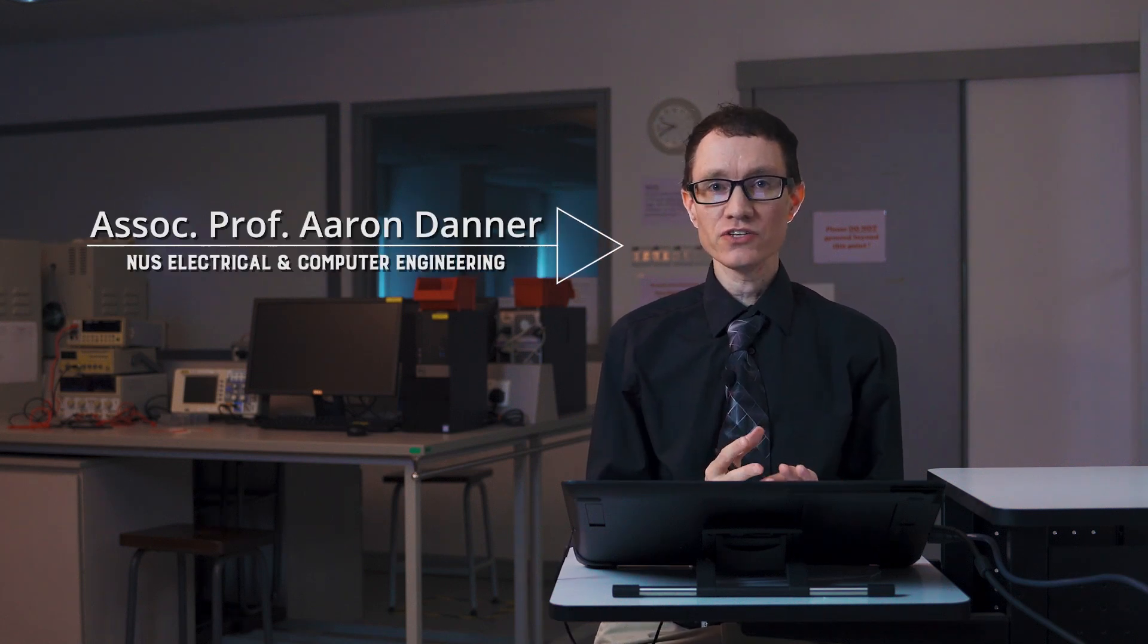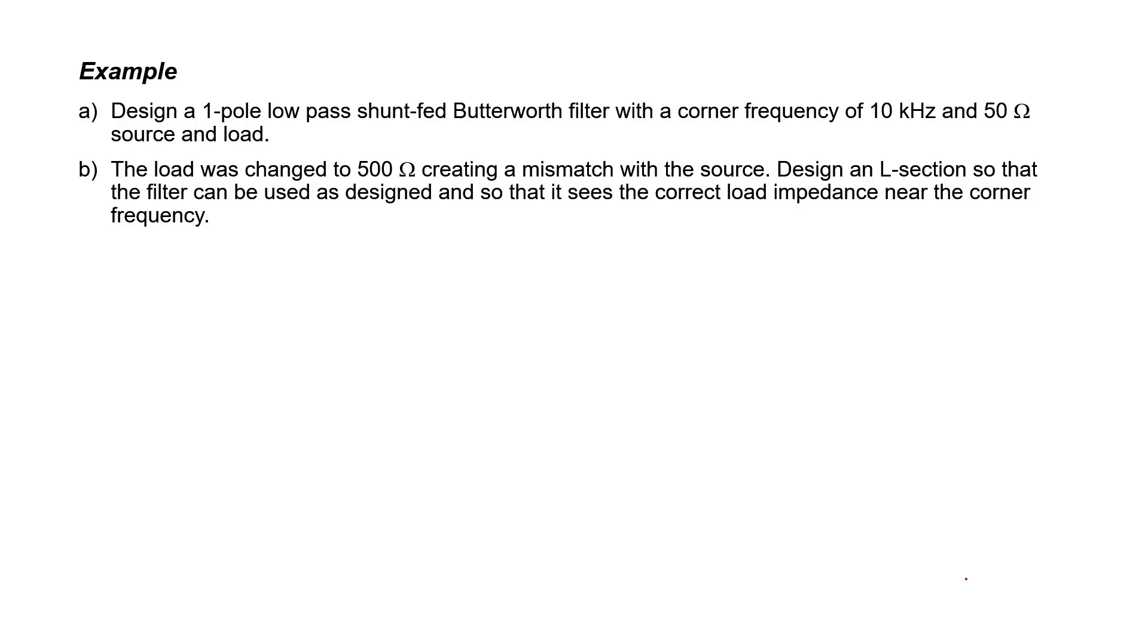Let's design a filter and then use an L-section in order to modify its behavior when the load is changed. We're going to be designing a one-pole low-pass shunt-fed Butterworth filter and we're going to start off with the load and source impedance being matched at 50 ohms.